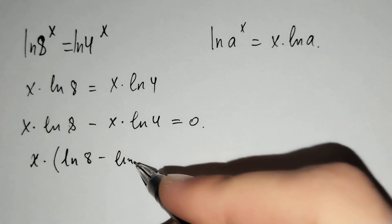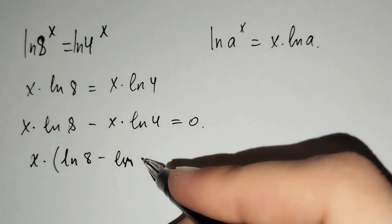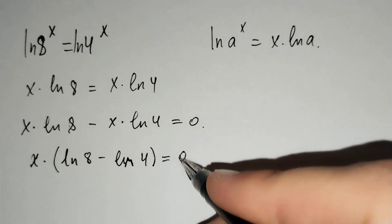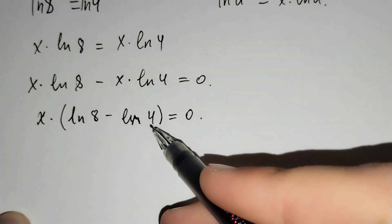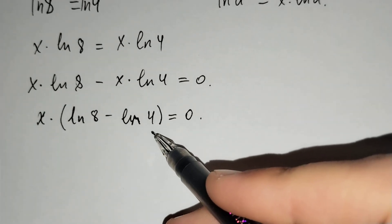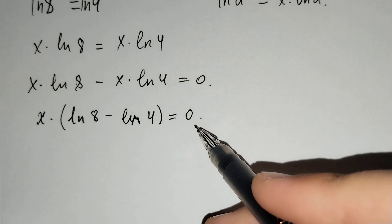Which is x times (ln 8 minus ln 4) equals zero. And we know that ln 8 minus ln 4 is not equal to zero. That's why x should equal zero.